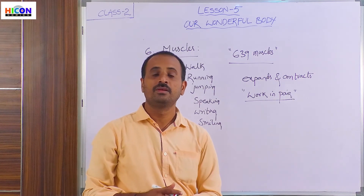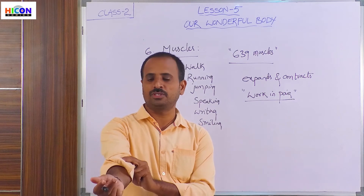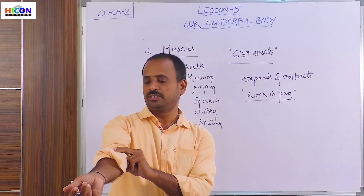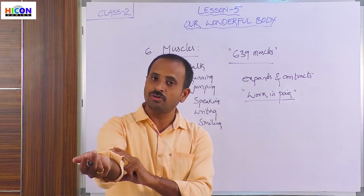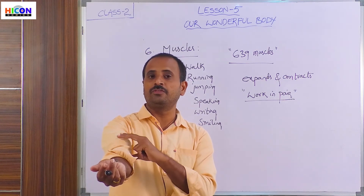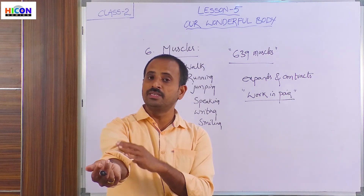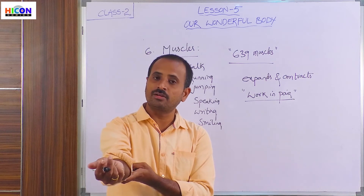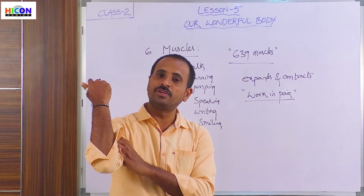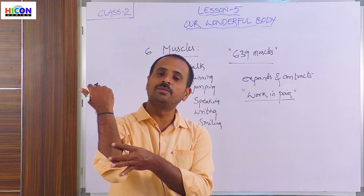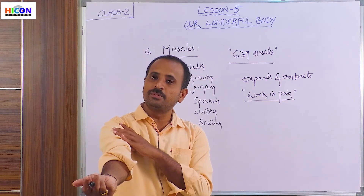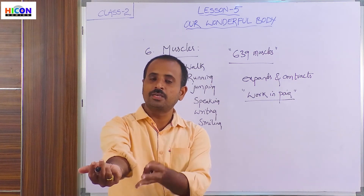For example, if you take the arm, at the arm joint there will be 2 muscles present. The muscles at the front of the joint are called biceps muscles. If you bend your arm, the biceps muscles will contract and the triceps muscles will expand. And again if you stretch out your arm, the biceps muscles will expand and the triceps muscles will contract.